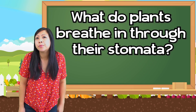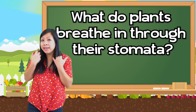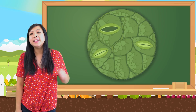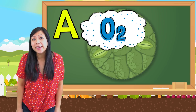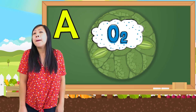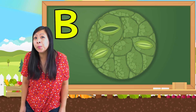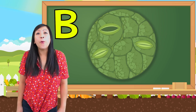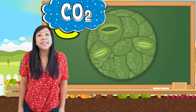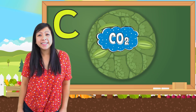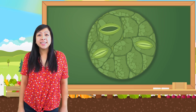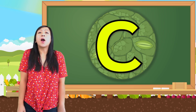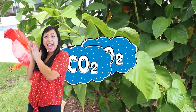Question number three: what do plants breathe in through their stomata? Is it A, oxygen? B, perfume? Or is it C, carbon dioxide? Did you get the answer? That's right, the answer is C, carbon dioxide!